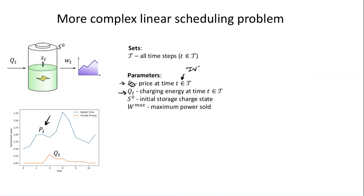So P_t or Q_t. Other parameters where you're being descriptive in the naming, we put as a superscript. Here we have our initial storage charge state—how much energy is in the battery at time zero. We'll call that S^0. Then we have the maximum power that can be sold at any moment in time. This keeps us from the trivial solution of selling all the power at the peak price period.